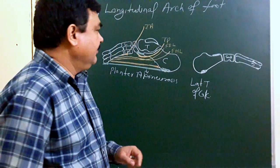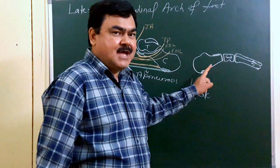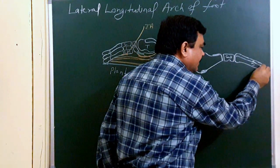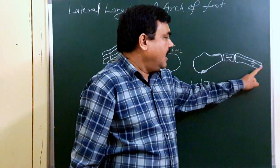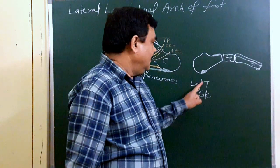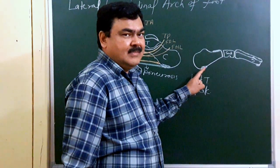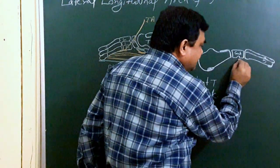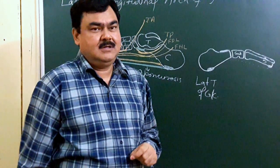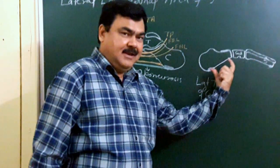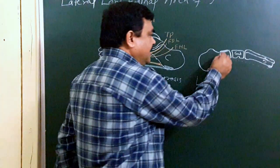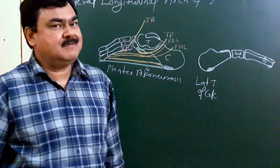The arch has an anterior end and a posterior end. The anterior end is formed by the heads of the fourth and fifth metatarsals. The posterior end is formed by the lateral tubercle of the calcaneum. The anterior pillar is formed by the fourth and fifth metatarsals and the cuboid bone. The posterior pillar is strong and formed by the calcaneum. The summit of this arch is present at the superior articular surface of the calcaneum.